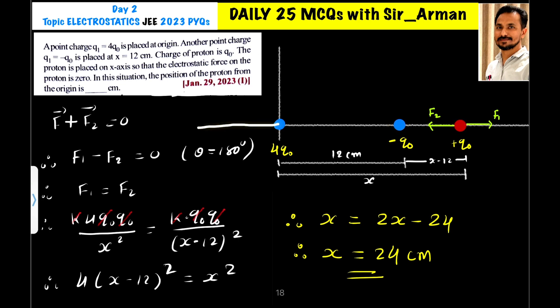On the left of this larger charge, the force due to this charge will dominate, hence we cannot place it there. That is why we are placing it here, because if we place it at this position, then this negative charge will attract it, whereas this positive charge will repel it.